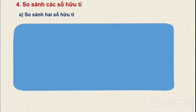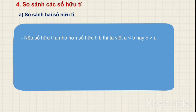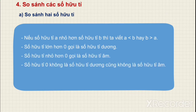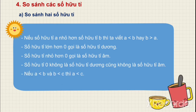So sánh các số hữu tỉ. Nếu số hữu tỉ A nhỏ hơn số hữu tỉ B thì ta viết A nhỏ hơn B hay B lớn hơn A. Số hữu tỉ lớn hơn 0 được gọi là số hữu tỉ dương; số hữu tỉ nhỏ hơn 0 được gọi là số hữu tỉ âm. Số hữu tỉ 0 không là số hữu tỉ dương, cũng không là số hữu tỉ âm. Nếu A nhỏ hơn B và B nhỏ hơn C thì ta nói A nhỏ hơn C.